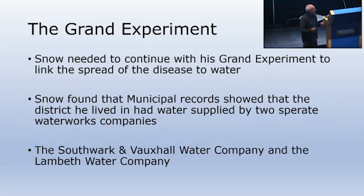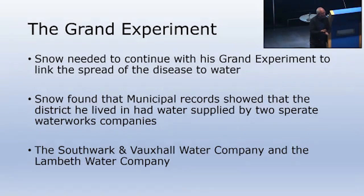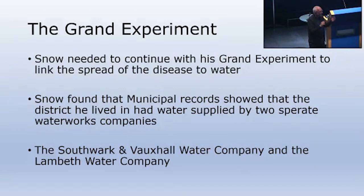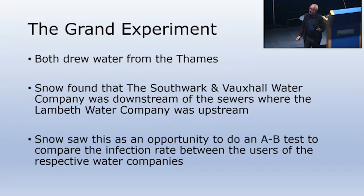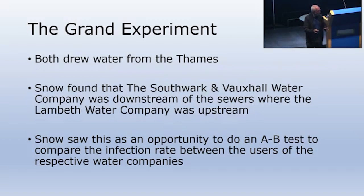Snow continued his experiments and started talking to William Farr, a statistician who kept the records. Although Farr was himself a miasma devotee, he was happy to work collaboratively and shared all the data. What Snow found was that a district had its water supplied by two separate water companies: the Southwark and Vauxhall Water Company, and the Lambeth Water Company. Both drew their water from the Thames, but Snow discovered that the Southwark and Vauxhall company drew from downstream of the sewers, while the Lambeth company drew from upstream. Snow thought: we can do an AB test to see who's getting cholera.